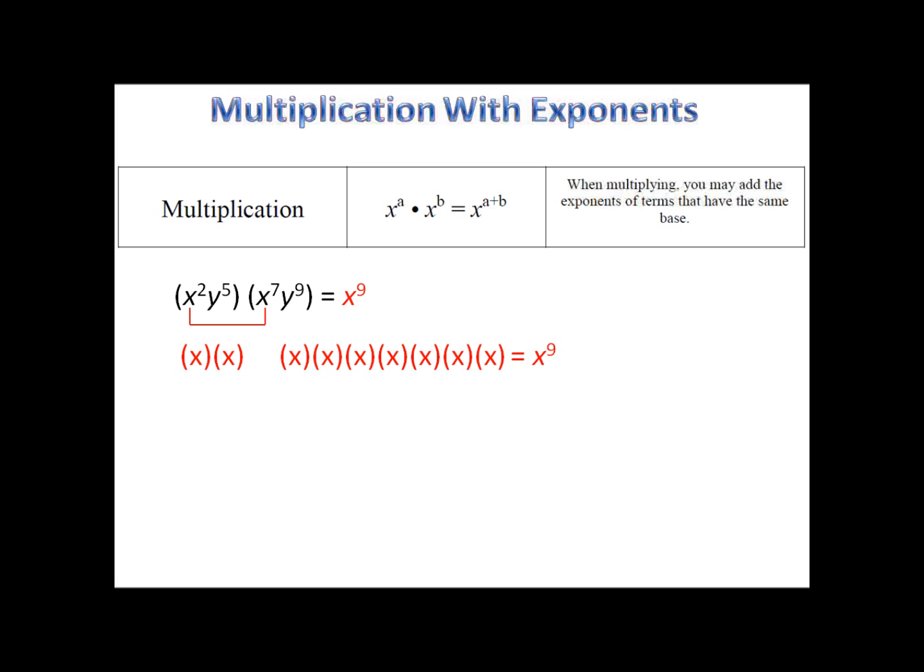Notice a nice shortcut for this. x to the second, x to the seventh. Take those two exponents, two plus seven, and that gives you the exponent for the product, x to the ninth.